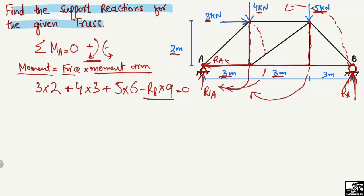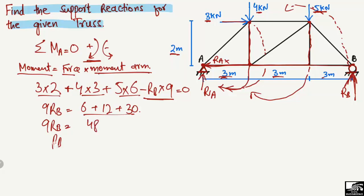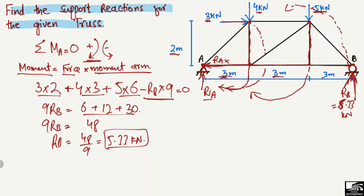Shifting values to the right side: 9RB equals 6 plus 12 plus 30, which gives 9RB equals 48. Dividing both sides by 9, RB equals 48 divided by 9, which gives RB equal to 5.33 kilonewtons. So RB equals 5.33 kilonewtons.